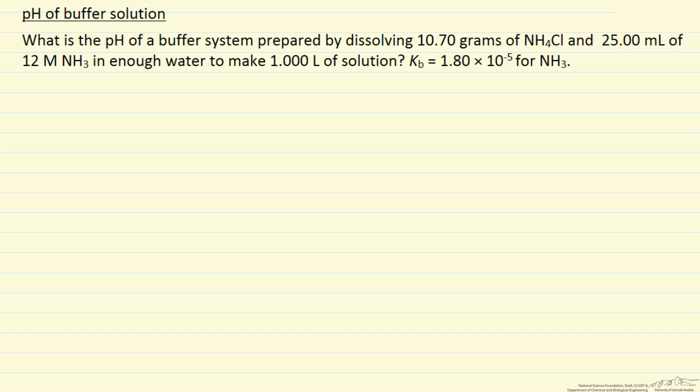Here we're going to calculate the pH of a buffer system, and we're going to obtain this buffer by dissolving ammonium chloride and ammonia in enough water to give us one liter of solution, and we're given Kb for the ammonia water reaction.